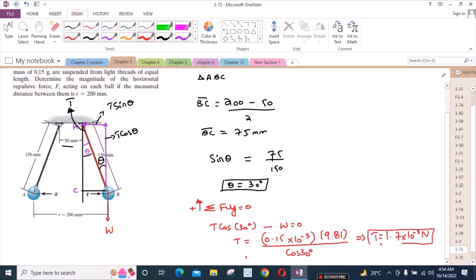We have to find the horizontal force F. If I apply sum of the forces in x direction equals to zero, considering the right-hand side as positive, we have F minus T sin 30 degrees equals to zero. So F is equal to T sin 30, which means 1.7 times 10 to the negative 3 times sin 30 degrees. From here, F is equal to 8.5 times 10 to the negative 4 newtons.